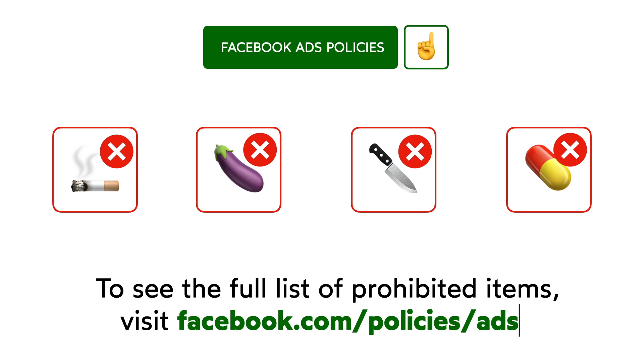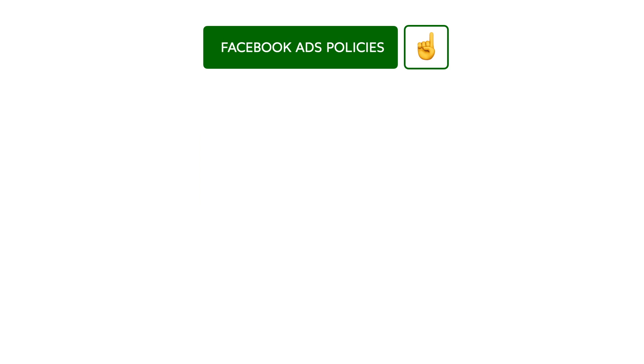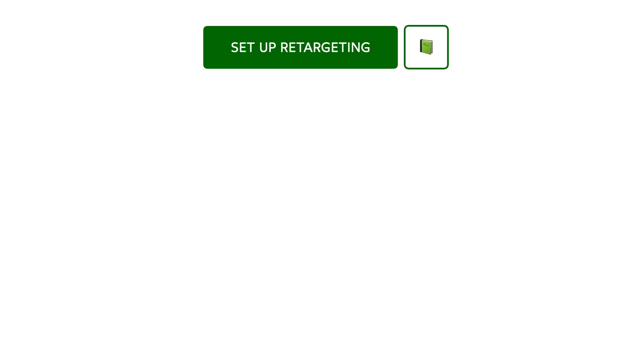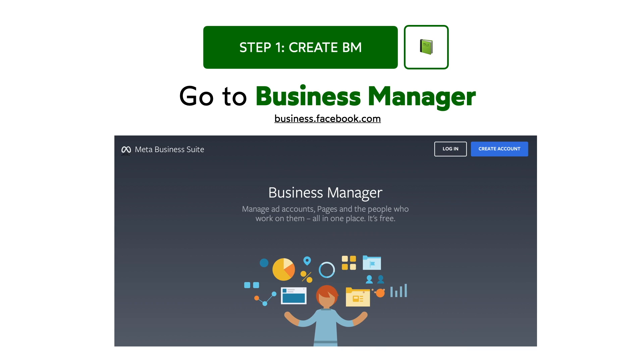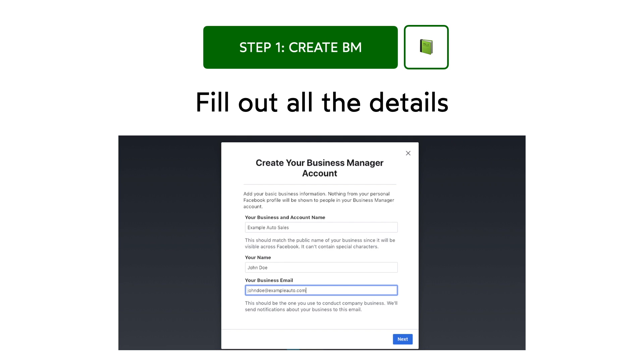The link to the policies is in the description. We will go over all the steps necessary to create the retargeting ads — if you're 100% sure you've already completed certain steps, feel free to skip them. First, create a Facebook Business Manager if you don't have one yet. It's the home for all ad-related assets on Facebook. Go to business.facebook.com and follow the on-screen instructions. Be sure to enter all the business details correctly — this shouldn't take more than 15 minutes.